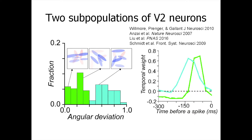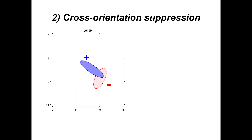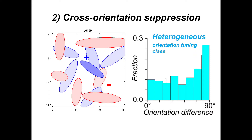The cross-orientation suppression I talked about was primarily for the homogeneously tuned population, but it is also observed for the non-homogeneously tuned population. Here is an example of all features locally at one position within the visual field. Blue are excitatory Gabors, red are suppressive Gabors, and locally for each excitatory Gabor one can find a nearby suppressive Gabor. Across the population of heterogeneously tuned cells, there is again a strong bias towards 90 degrees, meaning cross-orientation suppression is observed across both neuron types.